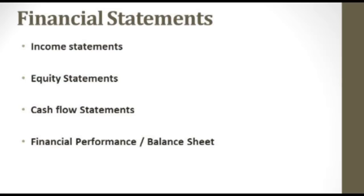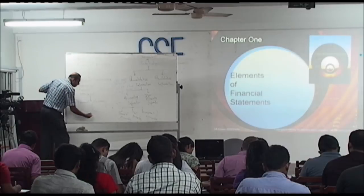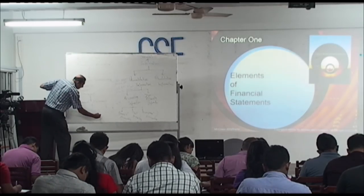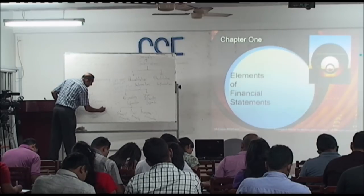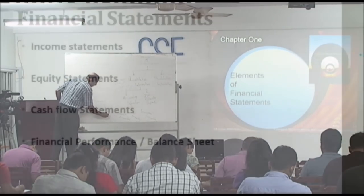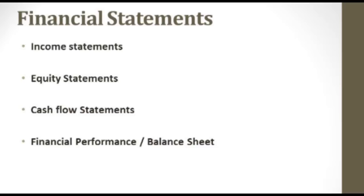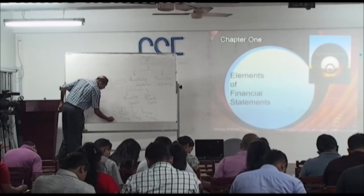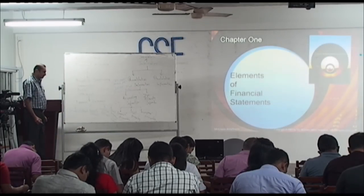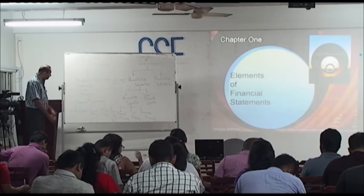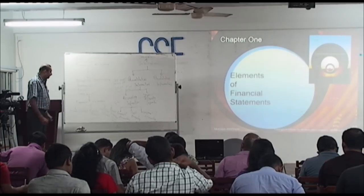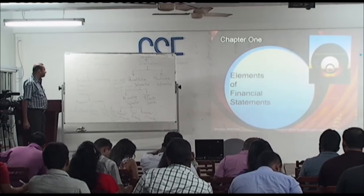The first is the income statement. The second is the statement of equity, also called the equity statement. Third is the cash flow statement, which is a very important statement. Fourth is the statement of financial performance, sometimes called the balance sheet — though 'balance sheet' is a slightly older term.